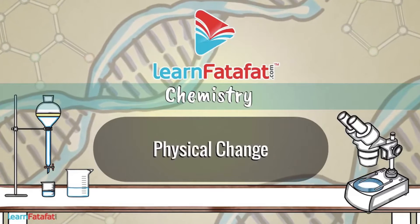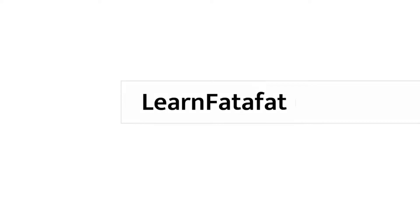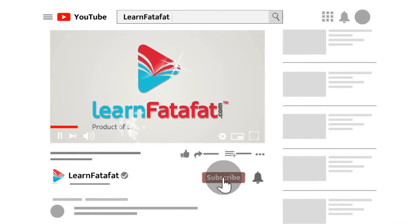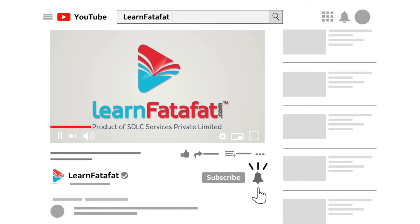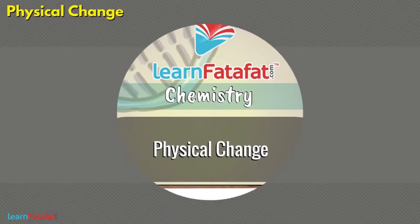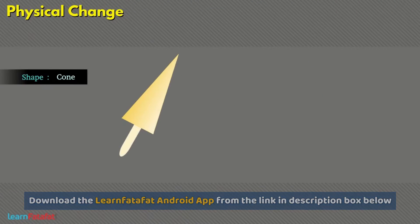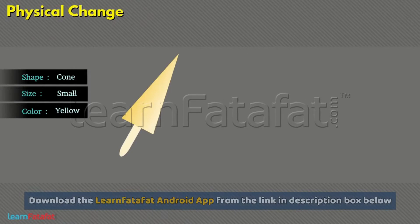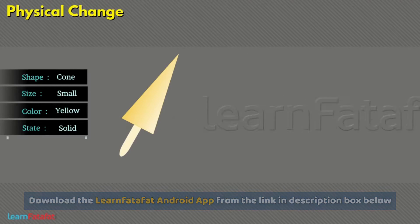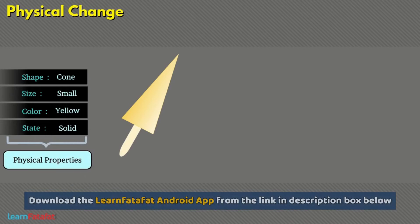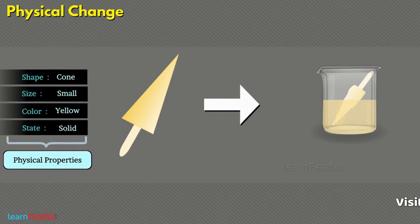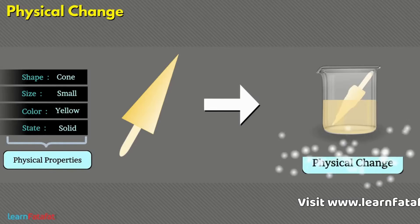Physical change. Normally, substances have properties such as shape, size, color, and state. These are called physical properties. When there is a change in these physical properties, the change is called a physical change.